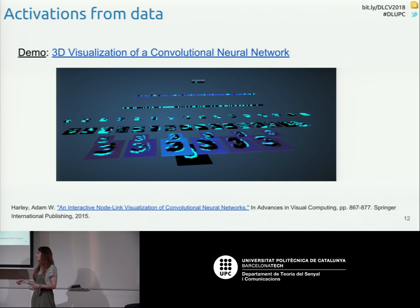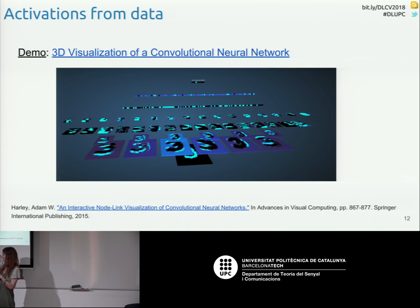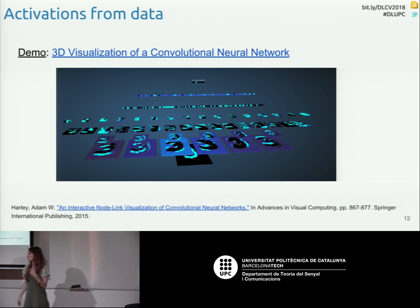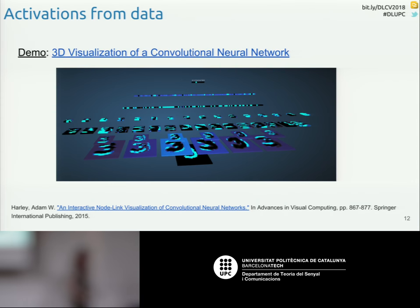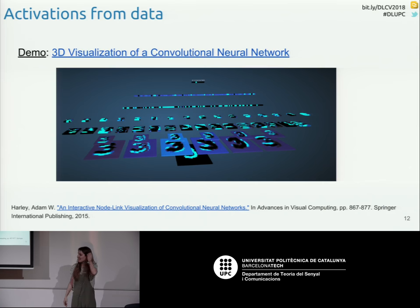There's another demonstration where you can go to the web — an example of a network trained with MNIST. It's a 3D visualization where you get all the different feature maps and activations for the different convolutional layers. You can draw a digit and see in real time how the activations change. You can move around in 3D to see how they evolve — it's cool. But there is nothing more than just looking at the activations; it's hard to say much without doing something additional.